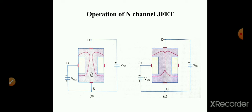The second figure shows the depletion regions touching each other and the drain current becoming zero. Here the reverse bias voltage at the gate-source junction is very large. At a particular voltage, the depletion regions touch each other and block the current flow. That process is shown in figure B.